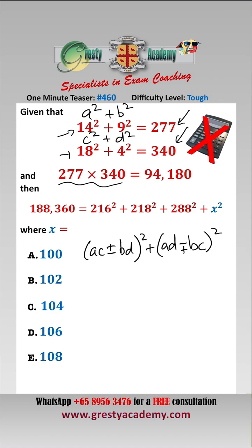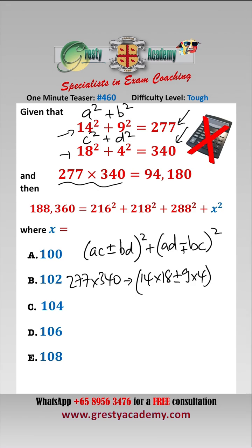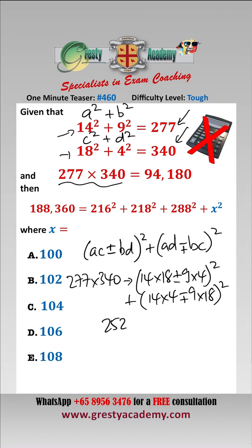All we need to do is plug these in. Therefore, 277 times 340 can be written either as (14·18 ± 9·4)² + (14·4 ∓ 9·18)², which simplifies to (252 ± 36)² + (56 ∓ 162)².